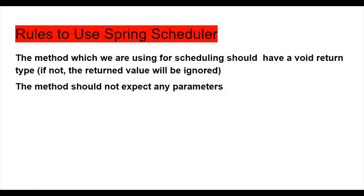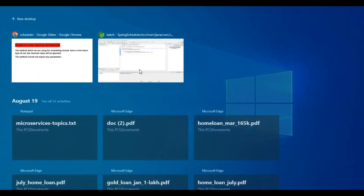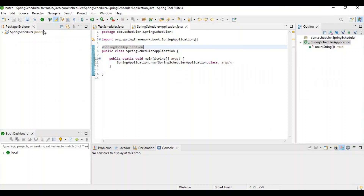Now let's discuss the rules for using Spring Scheduler. The method used for Spring scheduling should have a void return type — if not, the return value will be ignored. Also, the method should not expect any parameters.